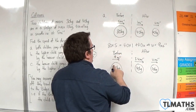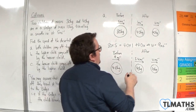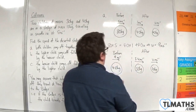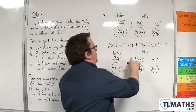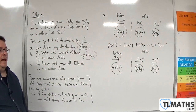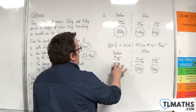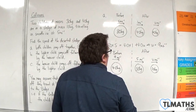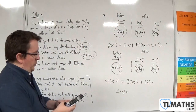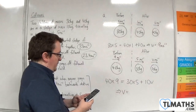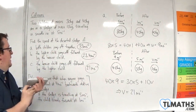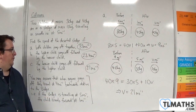So at 9 metres per second we have 40 kilos. After that, the lighter child (mass 30 kilos) jumps off. Their speed reduces by 4 metres per second down to 5 metres per second. The 10 kilo sledge continues at V metres per second. Using conservation of momentum: 40 times 9 equals 30 times 5 plus 10 times V. So 40 times 9 minus 30 times 5, divided by 10, gives 21 metres per second. That is the speed of the sledge if the heavier child jumps off first, followed by the lighter child.